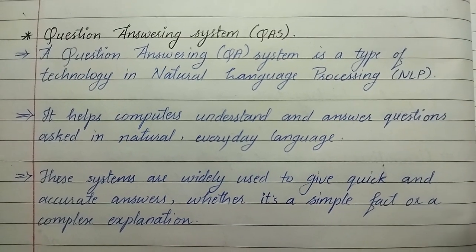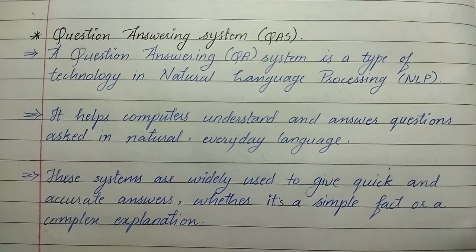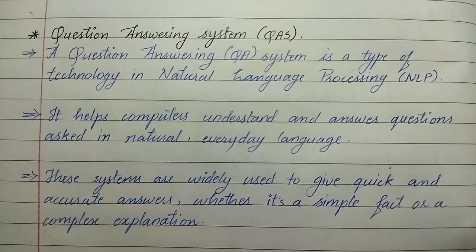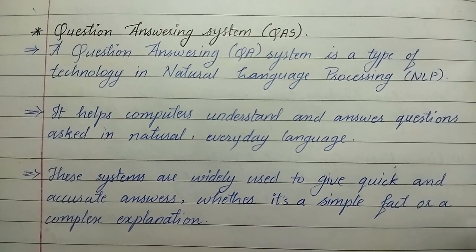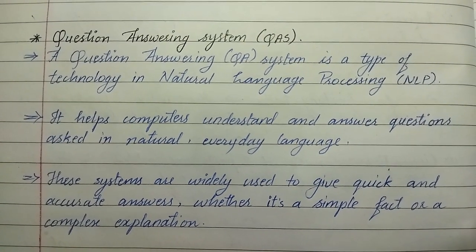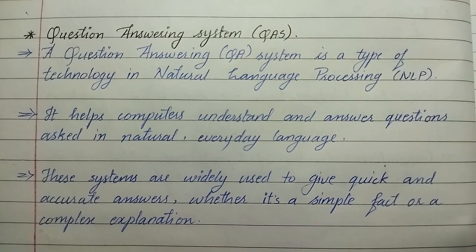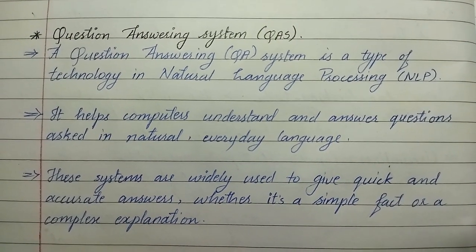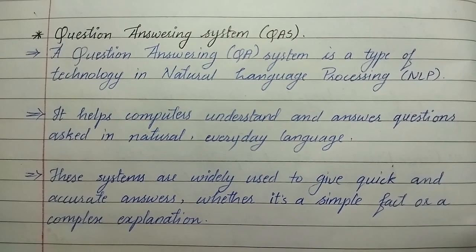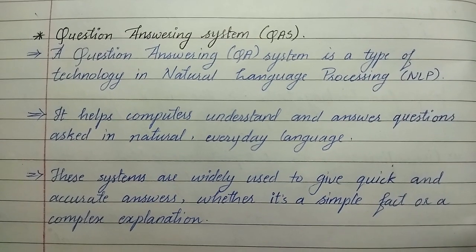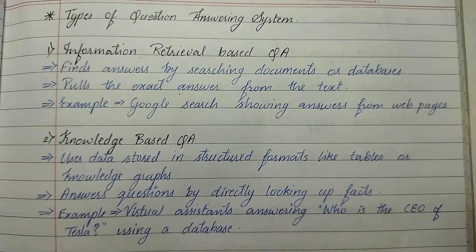Welcome back to On Time Notes. In this video we are going to see question answering systems (QAS). A question answering system is a type of technology in natural language processing that helps computers understand and answer questions asked in natural or everyday language. These systems are widely used to give quick and accurate answers, whether it's a simple fact or a complex explanation.